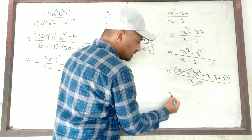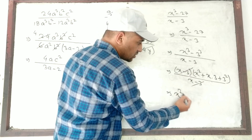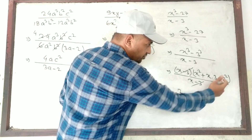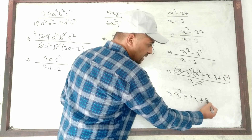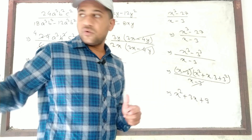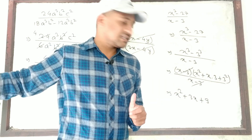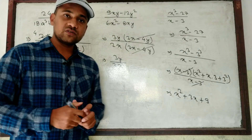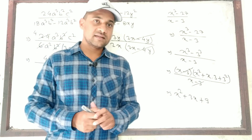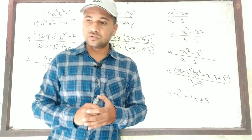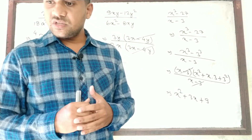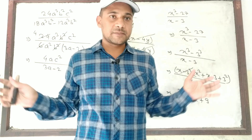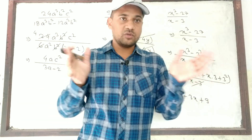The (X minus 3) in numerator and denominator cancel. What remains is X² plus 3X plus 9. Thanks for watching till the end. In the next video I will bring how to reduce into lowest terms with slightly bigger expressions. Thank you so much.